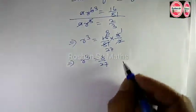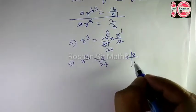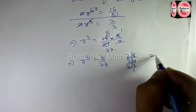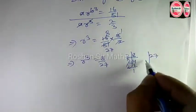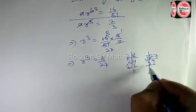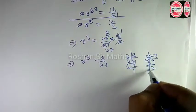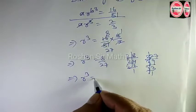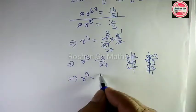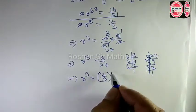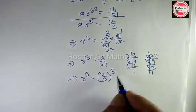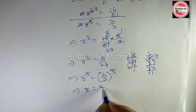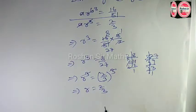इसके बाद आप क्या कर सकते हैं? 8 का LCM: 2×4=8, 2×2=4, 2×1=2. 27 का LCM: 3×9=27, 3×3=9, 3×1=3. यहाँ पर लिखिए R power of 3 is equal to (2 by 3) power of 3. यह दोनों cancel हो जाएंगे, R is equal to 2 by 3.